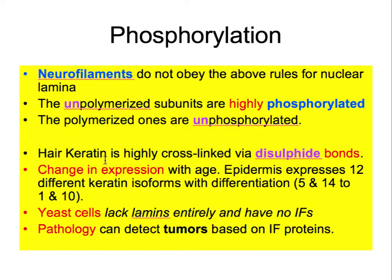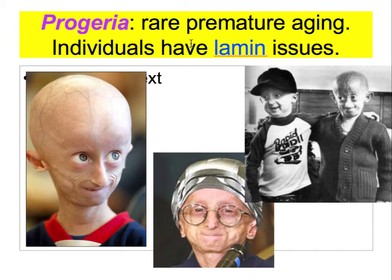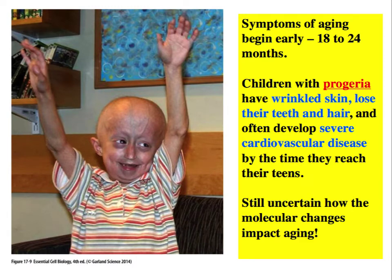Keratin secreted from cells is cross-linked by disulfide bonds to give hair its strength. Defects in intermediate filament genes such as keratins can lead to cell breakdown and have been detected in some tumor and cancer cells. Lastly, Progeria is a rare aging disease where lamin defects are paramount in causing the disease — symptoms of aging begin at 18 months to 2 years of age.